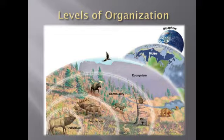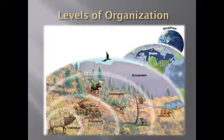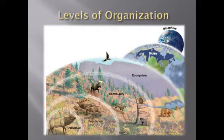The levels of organization is a concept many students find difficult, and it's best shown with a diagram. The first level is the individual — simply one organism. That could be one human, one antelope, one bird, one plant — one of anything.